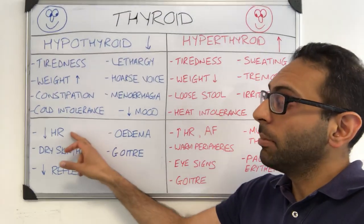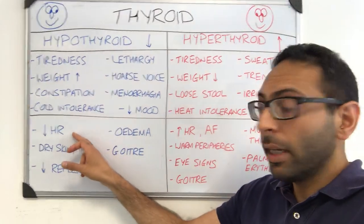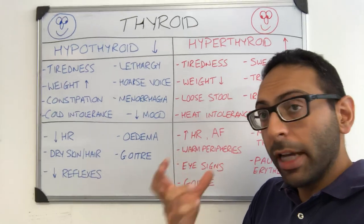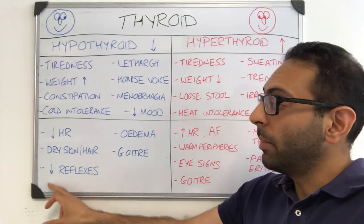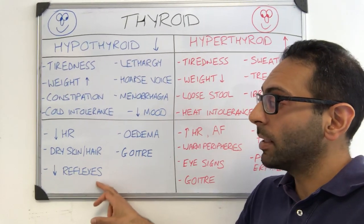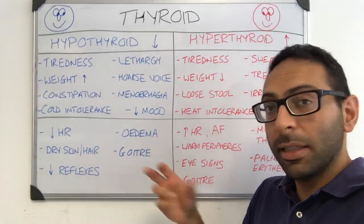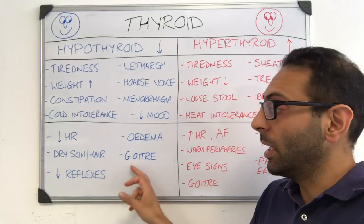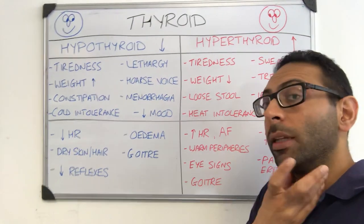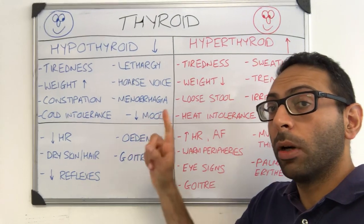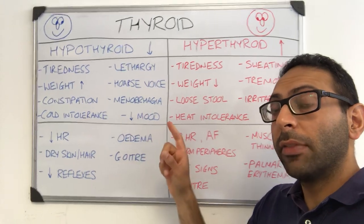Signs wise, you might be bradycardic, you may see dry skin, dry hair, you may have depressed or low reflexes, you may see signs of edema of breast parts in the body, and you may get a goiter in the neck as well. That's hypo or underactive.